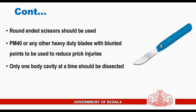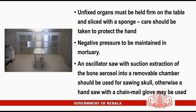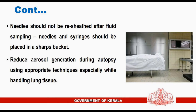Round-ended scissors should be used. PM40 or any other heavy-duty blades with blunted points should be used to reduce prick injuries. Only one body cavity at a time should be dissected. Unfixed organs must be held firm on the table and sliced with a sponge; care should be taken to protect the hand. Negative pressure is to be maintained in the mortuary. An oscillating saw with suction extraction of bone aerosol into a removable chamber should be used for sawing the skull; otherwise a hand saw with a chainmail glove may be used. Needles should not be re-sheathed after fluid sampling; needles and syringes should be placed in a sharps bucket.